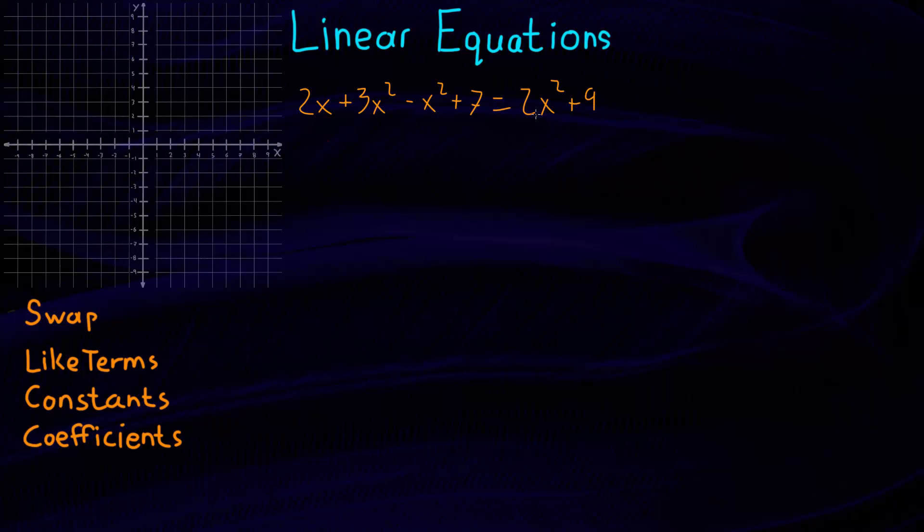So let's start solving this. First, we want to do any side swapping. We don't really need to do that here. So now we're down to like terms. Let's combine like terms. So this can be written, let's see, we have our highest order is squared, so we've got 3x squared minus x squared, that becomes 2x squared.